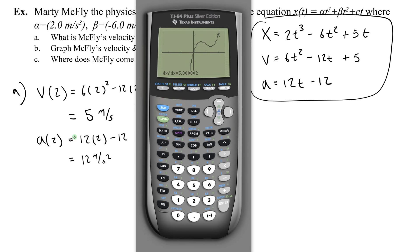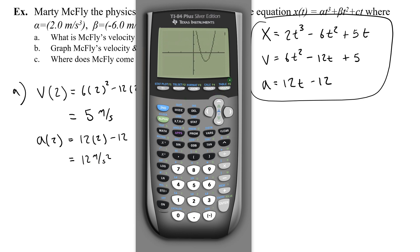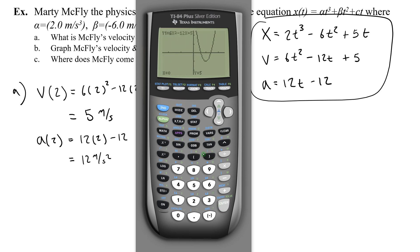To find the acceleration at 2 seconds using the calculator, I graph the velocity equation 6x squared minus 12x plus 5, then go to second calc derivative and find the derivative at 2. It tells me the derivative of the velocity function at 2 seconds is 12 — exactly what I calculated before. That's how you use your graphing calculator's graphing features to find derivatives at certain points.